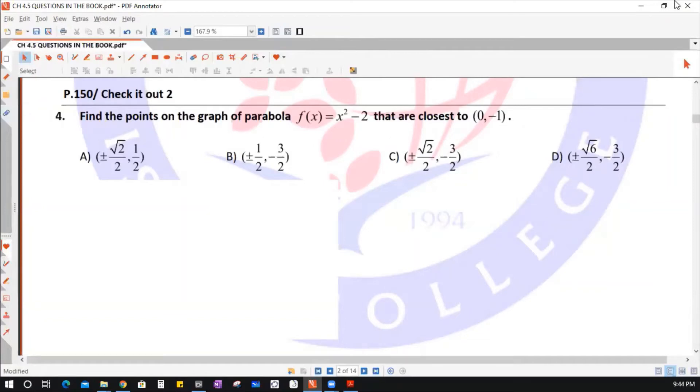In this question, find the points on the graph of the parabola x squared minus 2 that are closest to the point 0 and negative 1.